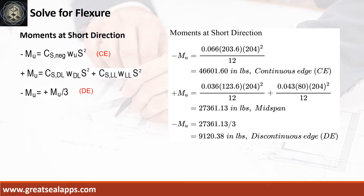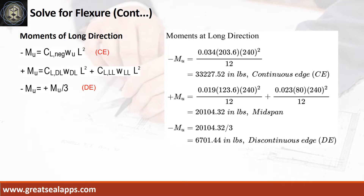Moments at short direction: negative moment at continuous edge is 46,601.6 inch-pounds; positive moment at mid-span is 27,361.13 inch-pounds; negative moment at discontinuous edge is 9,120.38 inch-pounds. Moments at long direction: negative moment at continuous edge is 33,227.52 inch-pounds; positive moment at mid-span is 20,104.32 inch-pounds; negative moment at discontinuous edge is 6,701.44 inch-pounds.